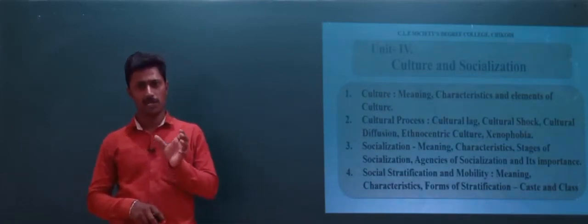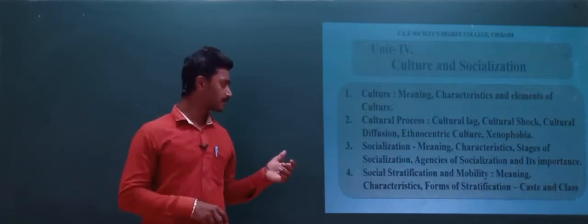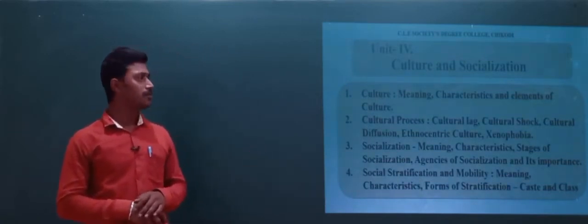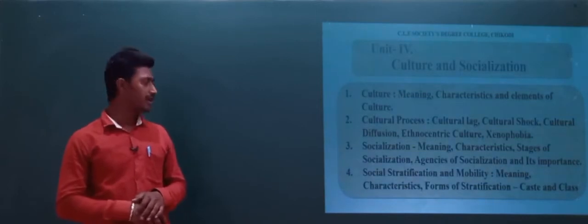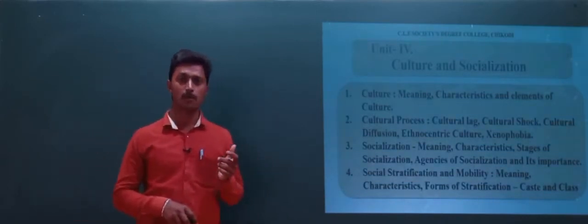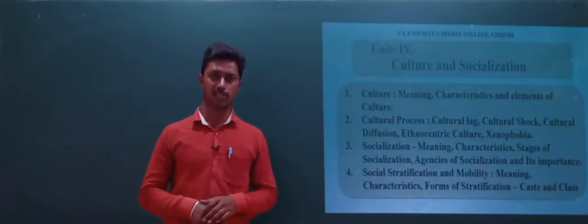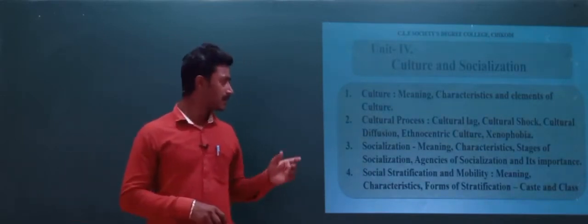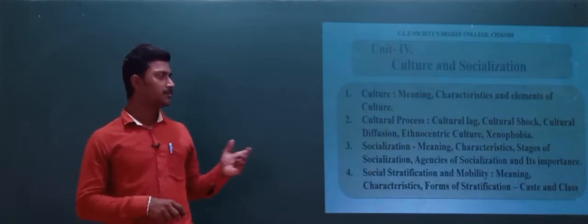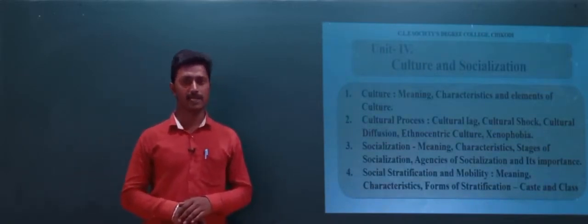Unit Number Five covers social stratification and social mobility — meaning, characteristics, and forms of social stratification, including caste and class.